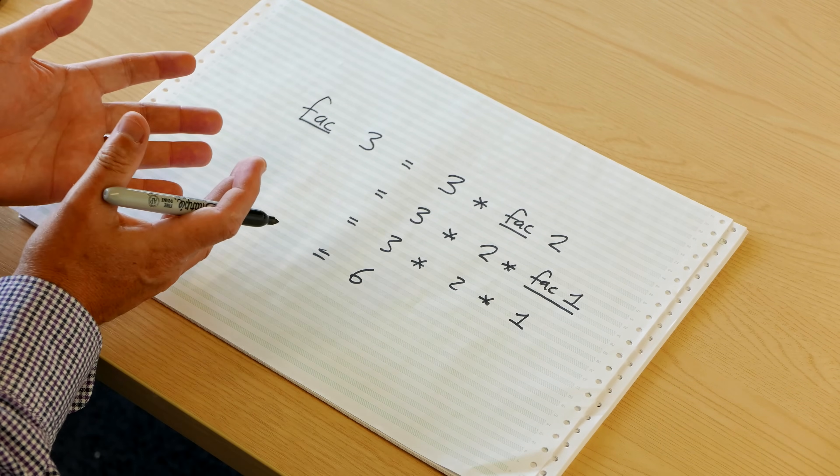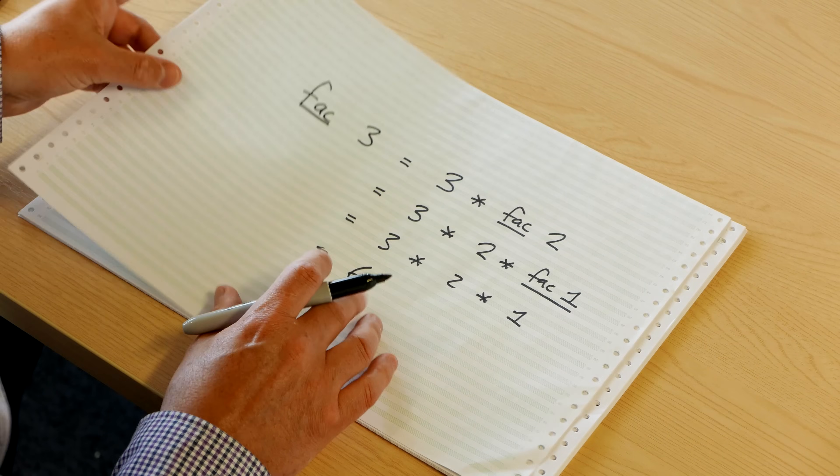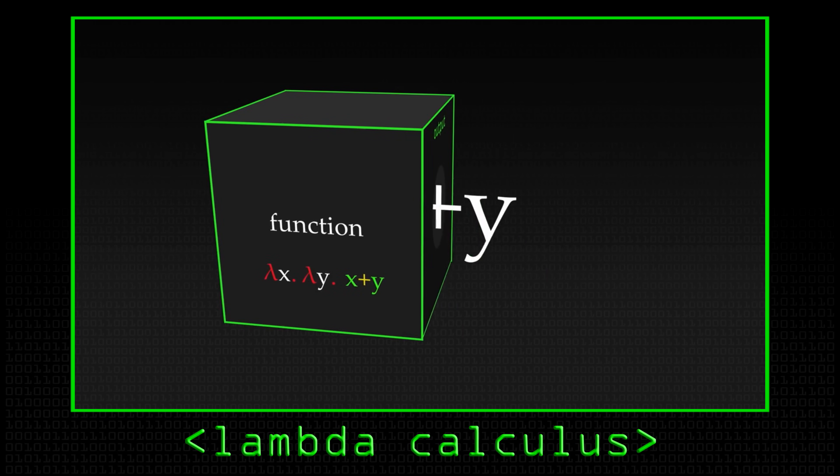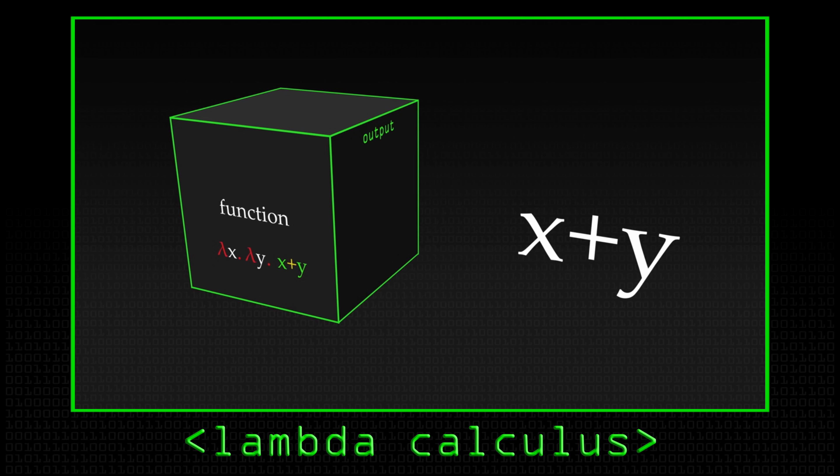So that's a simple example of a recursive function and how it may run. What we were looking at in the last video was the lambda calculus, which is a minimal language for defining functions. It's only got three things in it: variables like x, y, and z; a way of building functions using the lambda notation; and a way of applying functions by putting two things next to each other.